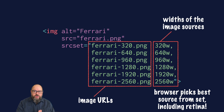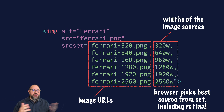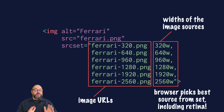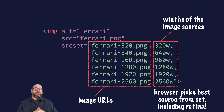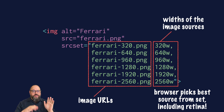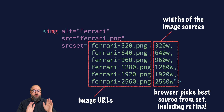It's smart enough to know that if the image will be displayed at 800 pixels wide, it should choose an asset from the list that's at least 800 pixels wide. It also knows how to handle high-density screens. For example, if the image will be displayed at 320 pixels wide on a retina device, it should choose an asset that is at least 640 pixels wide. So you don't need to worry about 1x and 2x images. All you have to do is provide a good set of images, and the browser will do the rest.